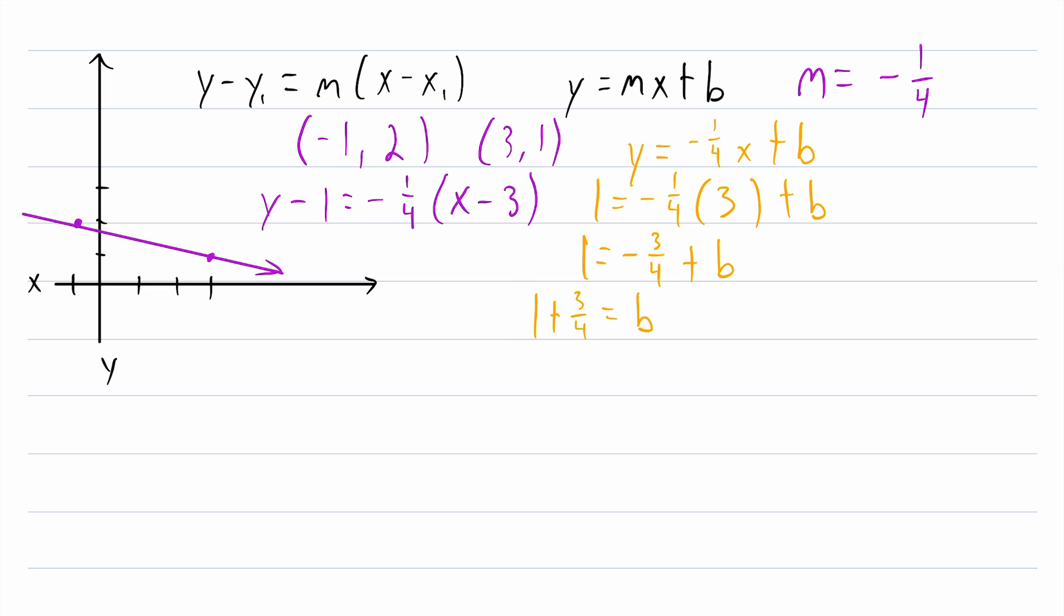Then we'll get some common denominators here so we can do some fraction addition. We know that 1 is equal to 4/4. So this is 4/4 plus 3/4, that's equal to 7/4. And that is our y-intercept b. So now to finish our slope-intercept form equation for this line, we can replace b with 7/4. So the equation is y equals negative 1/4 x plus 7/4.